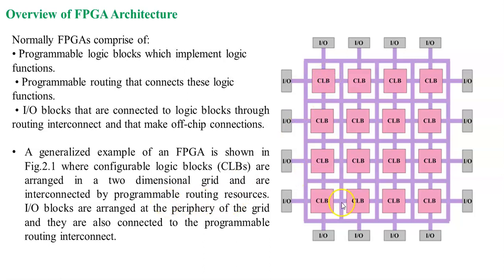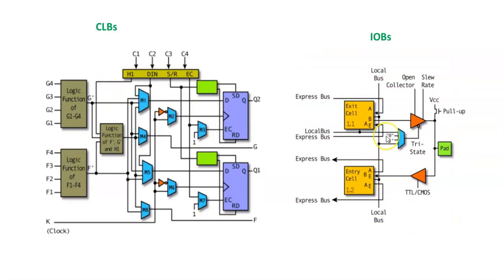This is a generalized example structure for the FPGA. The main blocks are configurable logic blocks, arranged in a two-dimensional grid and interconnected with programmable routing resources. Every configurable logic block is routed with programmable routing resources based on the connections. IO blocks are arranged at the periphery of the grid and also connected to the programmable routing interconnect. The logic block contains multiplexers, flip-flops, buffers, etc.